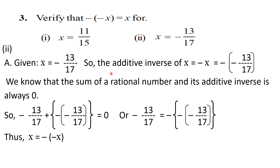Part two: given x equals minus thirteen upon seventeen. The additive inverse of x is minus x, which equals minus bracket minus thirteen upon seventeen close bracket. We write: minus thirteen upon seventeen plus big bracket minus bracket minus thirteen upon seventeen close bracket equals zero. So minus thirteen upon seventeen equals the negative of the bracket expression. Here x is minus thirteen upon seventeen, this is x, and the additional minus sign makes minus minus x, so x equals minus minus x is verified.